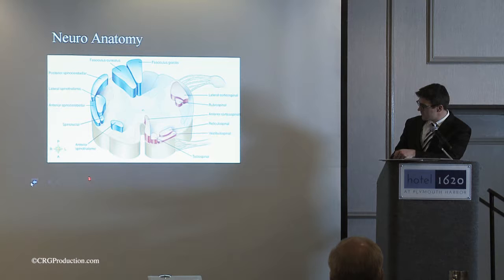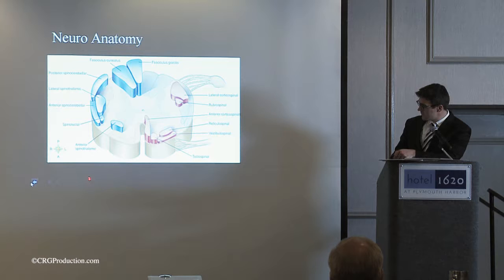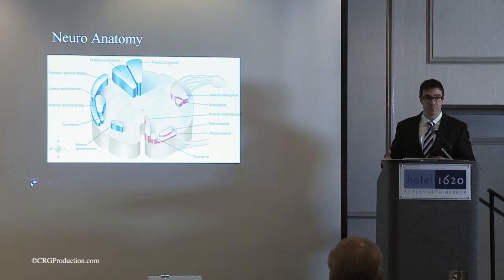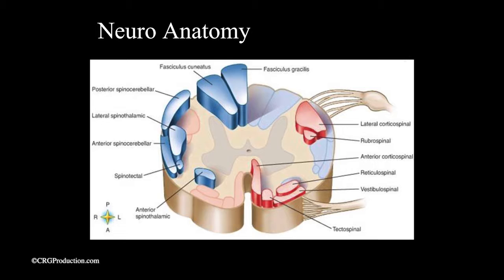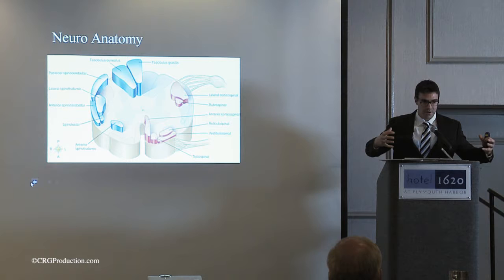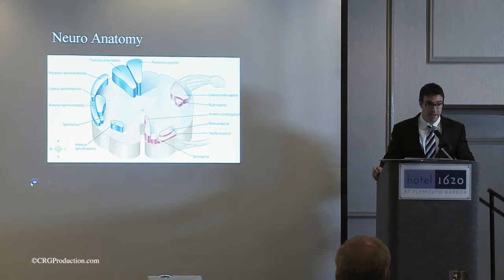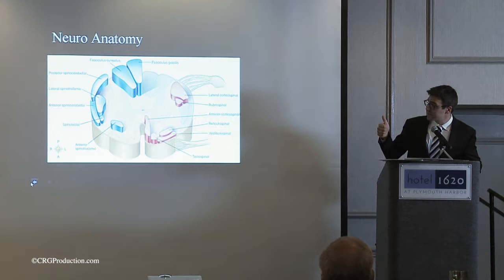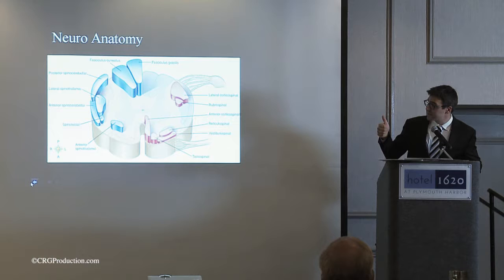Those nerves exit through the ventral rami and then go to the periphery to control muscles. Depicted in blue are the sensory tracts, which ascend. These begin with nerve fibers in the periphery such as the arms and legs, take that sensory information to the spinal cord, and then go up to the brain. The posterior columns at the back of the spinal cord are responsible for proprioception — joint position sense in space — as well as vibration sense and some light touch. That tract ascends and then crosses at the level of the brain stem.